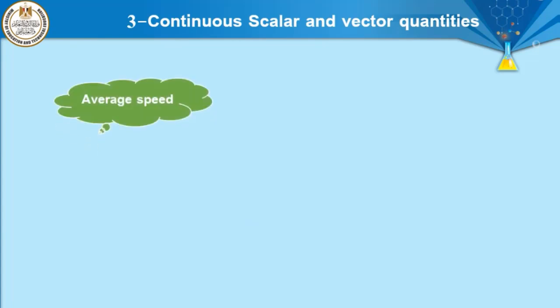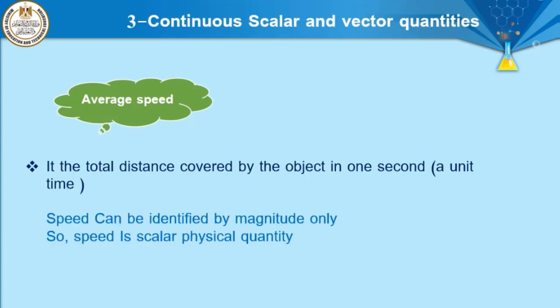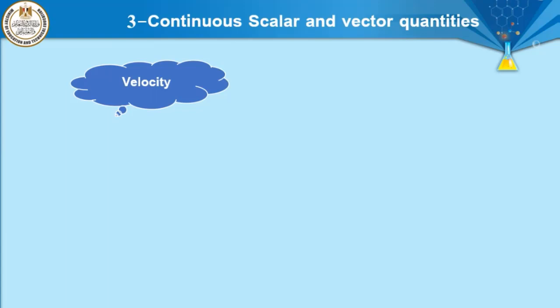The meaning of average speed is the total distance covered by the object in unit time. Speed can be identified by magnitude only, so speed is a scalar physical quantity because it can be defined by its magnitude and has no direction. Speed equals the total distance covered by the object divided by total time.